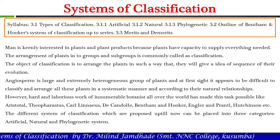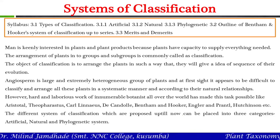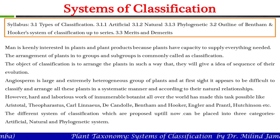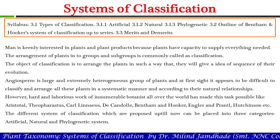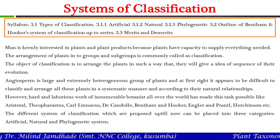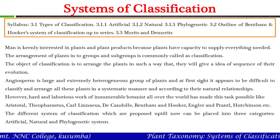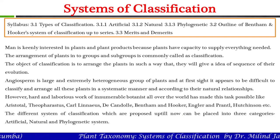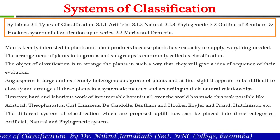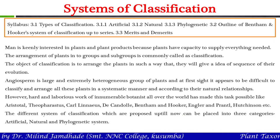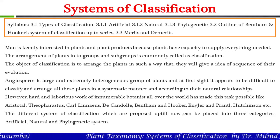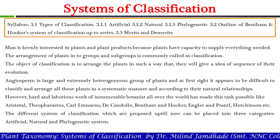Angiosperms are a large and extremely heterogeneous group of plants, and at first sight it appears difficult to classify and arrange all these plants in a systematic manner according to their natural relationships. However, this hard and laborious work was carried out by renowned taxonomists such as Aristotle, Theophrastus, Linnaeus, Dickendall, Bentham and Hooker, Engler and Prantl, Hutchinson, etc., who contributed to the classification of plants.